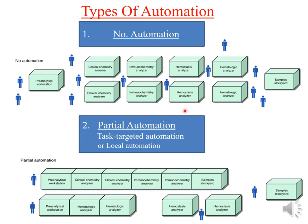The second type of automation is known as partial automation, or task-targeted automation — also called local automation. Here again there are different sections, each with a different pre-analytical workstation, and there are fewer people involved compared to the lab with no automation.